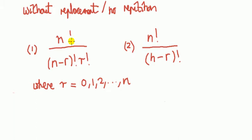Because they look very similar, you've got n factorial on the top, on the bottom it looks same, the only difference is that this left expression has an r factorial as well.